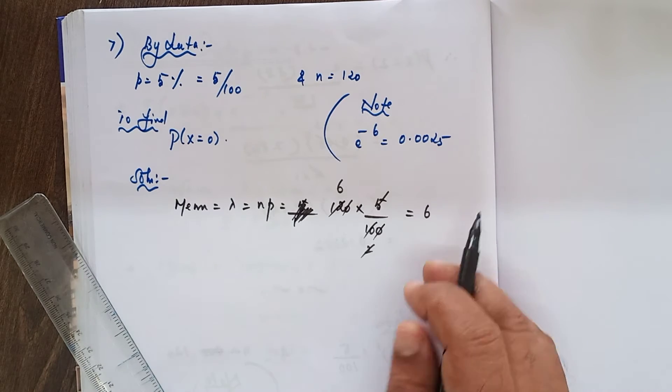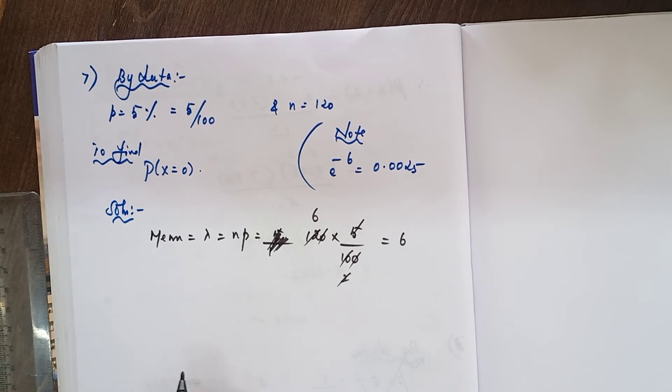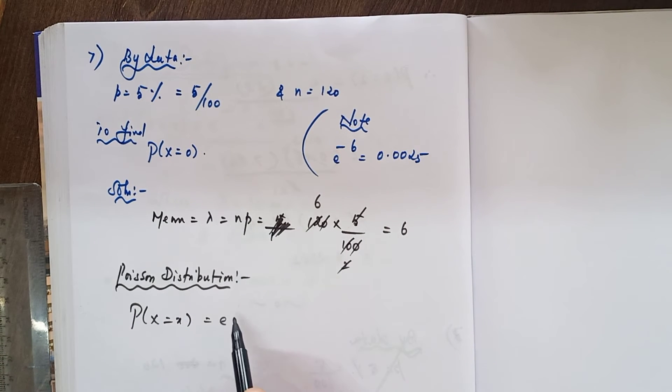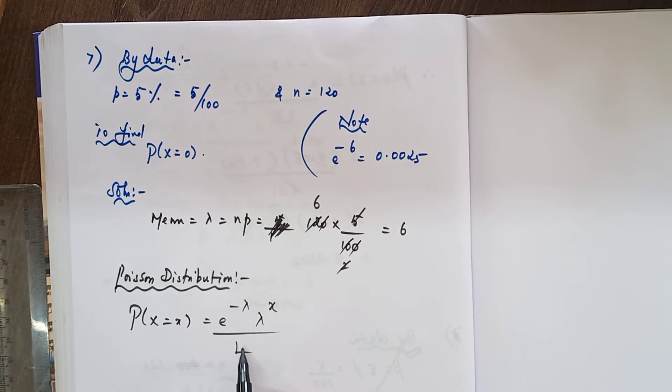Now you can write the formula for Poisson distribution. Probability of x equals x, that equals e power minus lambda into lambda power x divided by x factorial, where x equals 0, 1, 2, and so on to infinity.